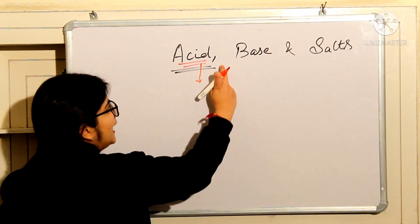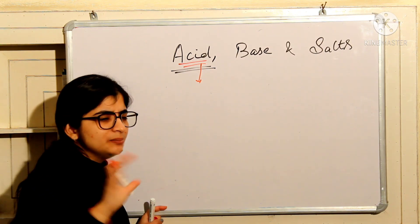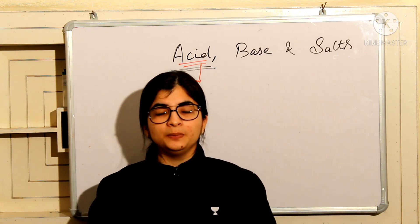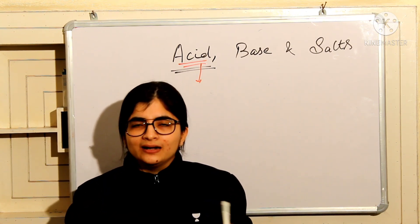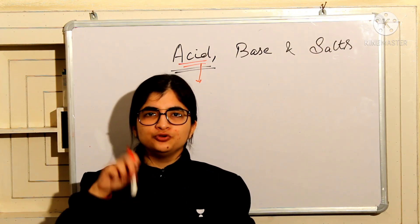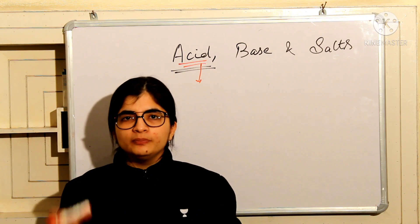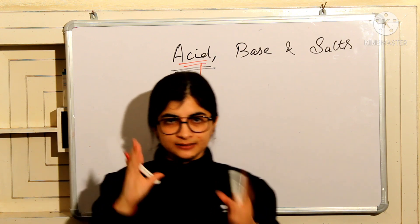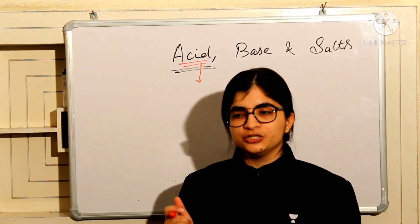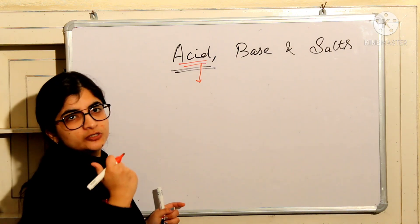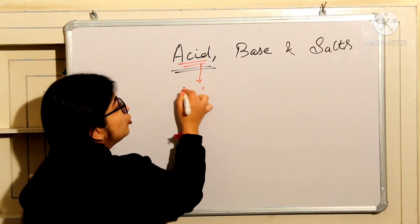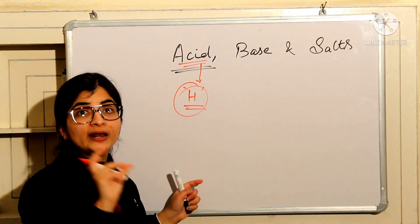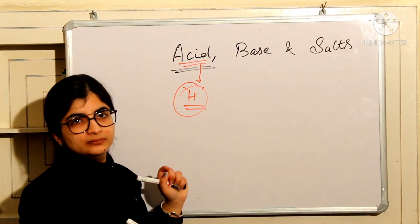Acid — A for acid. The most important concept chemically is: an acid must have hydrogen present. That is the compulsion — hydrogen must be present for it to be an acid. Remember: hydrogen.